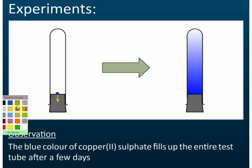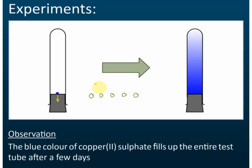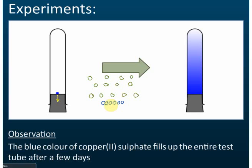Let me use green to represent the particles of the gel, and here are the particles of the copper sulfate. What happens is the particles of the copper sulfate dissolve in the gel, and then they move randomly. Random means they move in directions that cannot be determined — moving here, bouncing back, going down, going here.